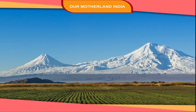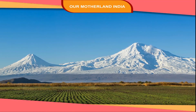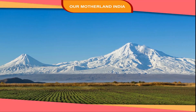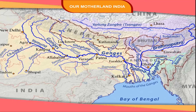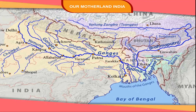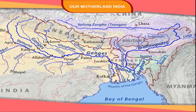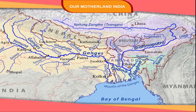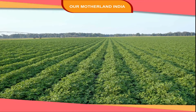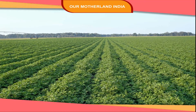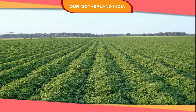The Northern Plains. The Northern Plains are the flat surface of land. Rivers like the Ganga, Yamuna, Satlaj and Brahmaputra flow and water these plains. This makes the land fertile. Good yield of crops are obtained from these plains.